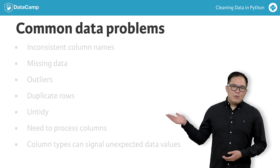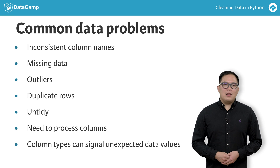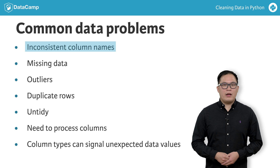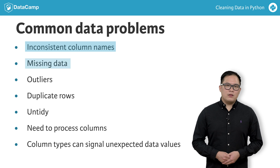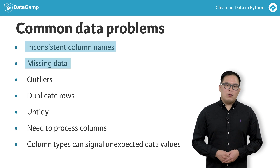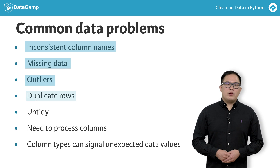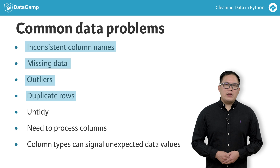Here are some common data problems that you will learn how to clean. Column names can have inconsistent capitalizations and/or bad characters. Missing data needs to be identified and addressed. Outliers can pose a potential problem and need to be investigated. Duplicate rows can bias analysis and need to be found and dropped.